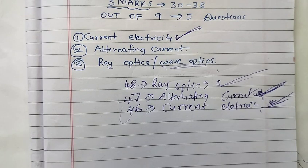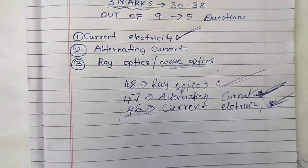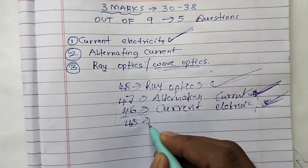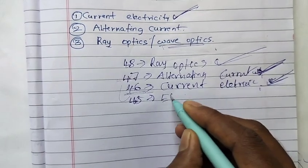Two point charges, each of plus 2 micro coulomb, are placed at two corners A and B of an equilateral triangle ABC with side 0.2 meter. Find the magnitude and direction. This is the 45th question — electric charges and fields.